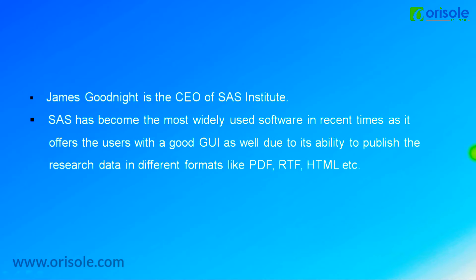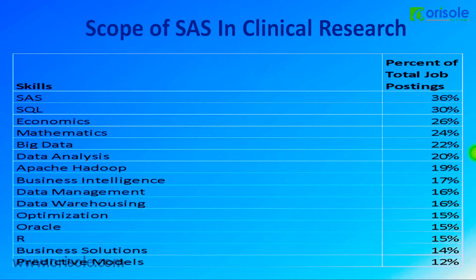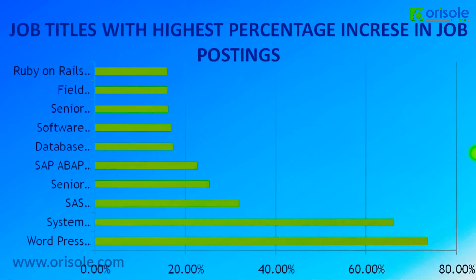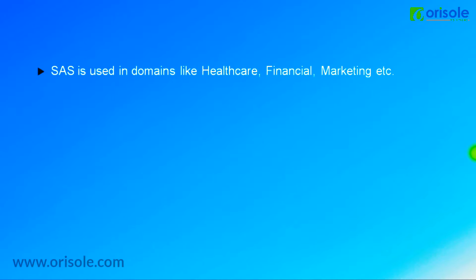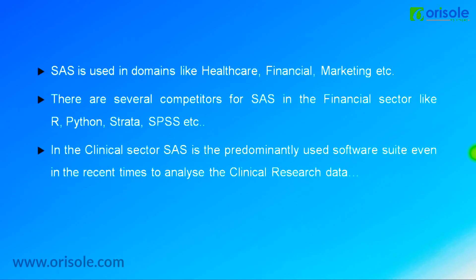The SAS Institute is in North Carolina, USA, and the CEO for that institute is James Goodnight. Coming to the job scope in the current market: there are many competitors for SAS like R, Python, SQL, etc., but among all those, SAS has around 36 percent of total job openings compared to all other competitors. SAS is widely used in the financial sector and clinical sector. In the clinical sector, there is no other competitor for SAS till date, making it the most widely used software for analyzing clinical trial data.